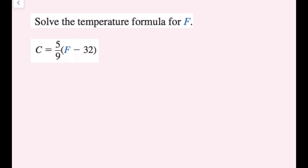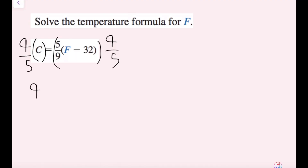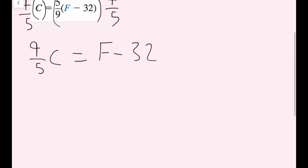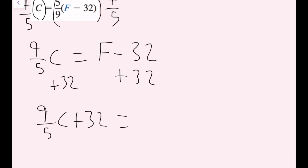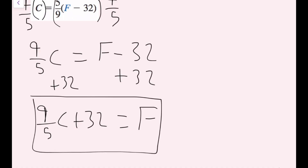We're going to solve the temperature formula for F. I have the Celsius equation and I want to solve for Fahrenheit in terms of Celsius. You could distribute first, but 5 ninths and 32 won't go all too well together, so instead I'm going to get rid of the 5 ninths first, then add 32. To cancel multiplying by 5 ninths, I multiply by its reciprocal, 9 fifths, on both sides. I get 9 fifths C equals F minus 32. Then I add 32 on both sides, giving F equals 9 fifths C plus 32 — the Fahrenheit temperature equation in terms of Celsius.